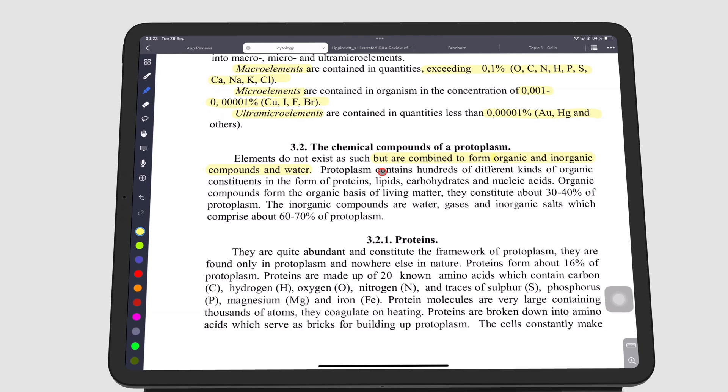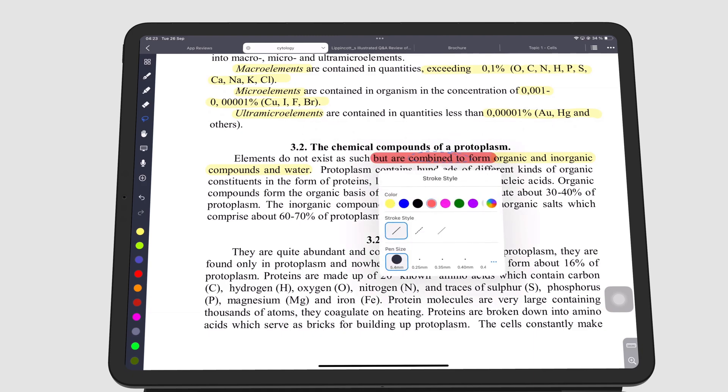To change the highlighter color, select it using the lasso tool. Go to style and pick the color you want.